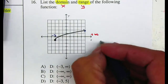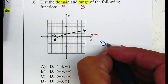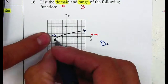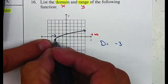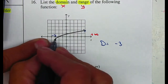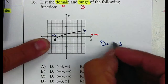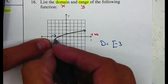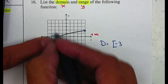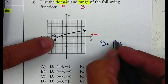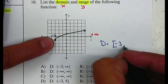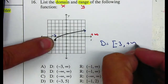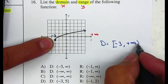So your domain will be from negative 3. It does include negative 3, and they make it very clear because of the closed dot, so we are going to place a bracket. If it is open or if there is an asymptote, it is going to be a parenthesis. All the way to positive infinity — and remember, infinity will always get a parenthesis.